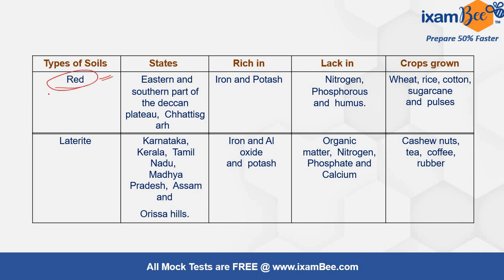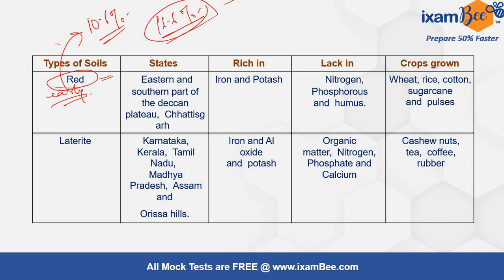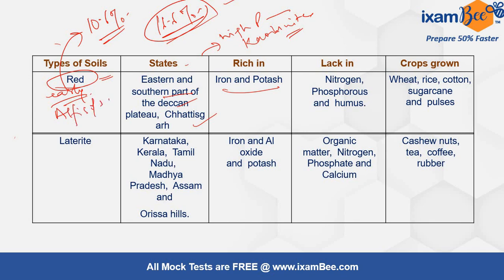Red soil is also known as early soil because it favors the early sowing of crops. It covers approximately 10.6 percent of the total land mass and is mainly found in the eastern and southern parts of the Deccan Plateau and Chhattisgarh. It is rich in Iron and Potash and has high phosphorus fixation capacity due to the presence of kaolinite clay mineral. The major soil order from which it is formed is Alfisol. It is suitable for growing wheat, rice, cotton, sugarcane, and pulses.